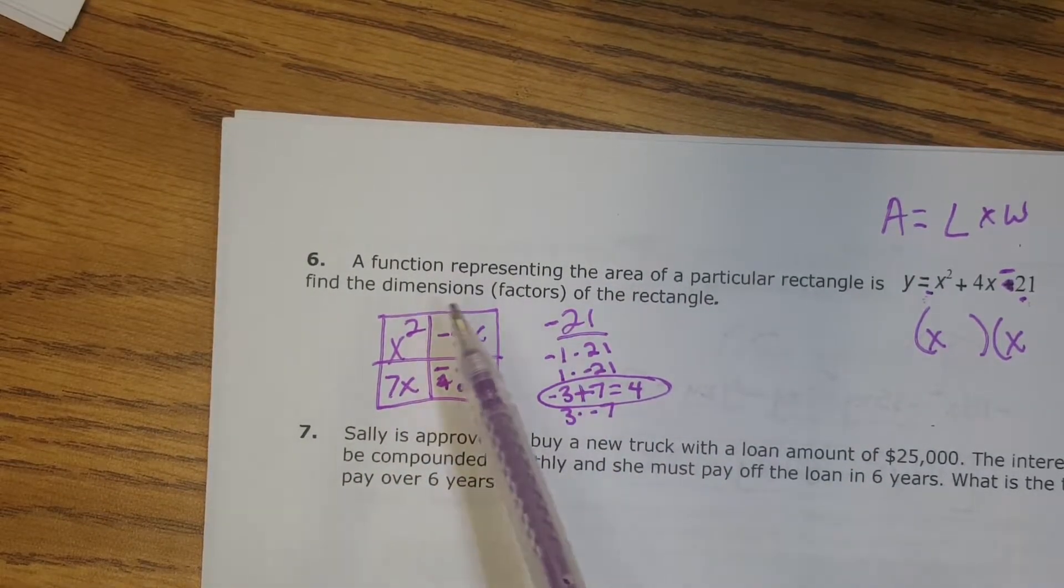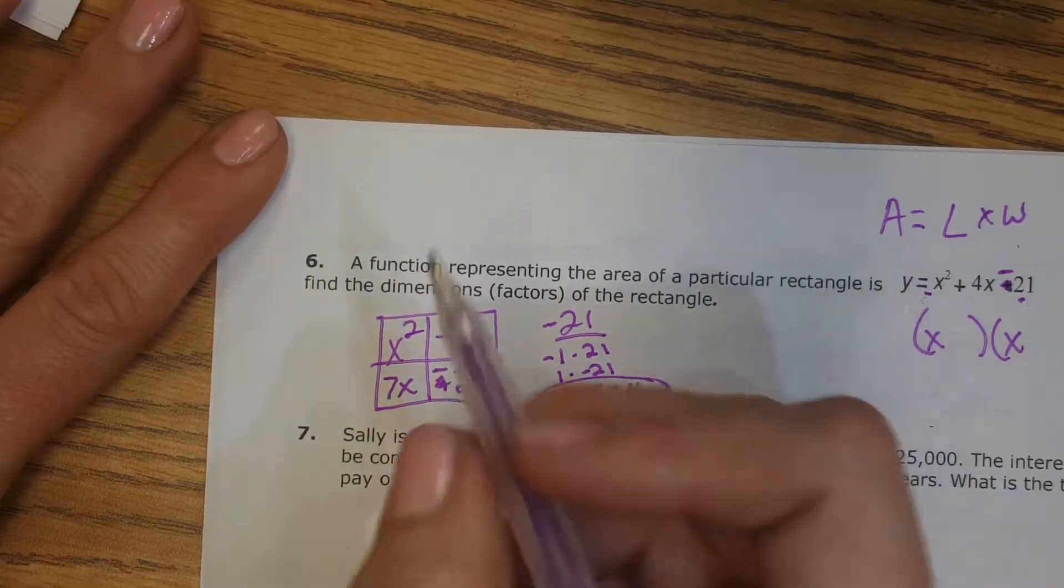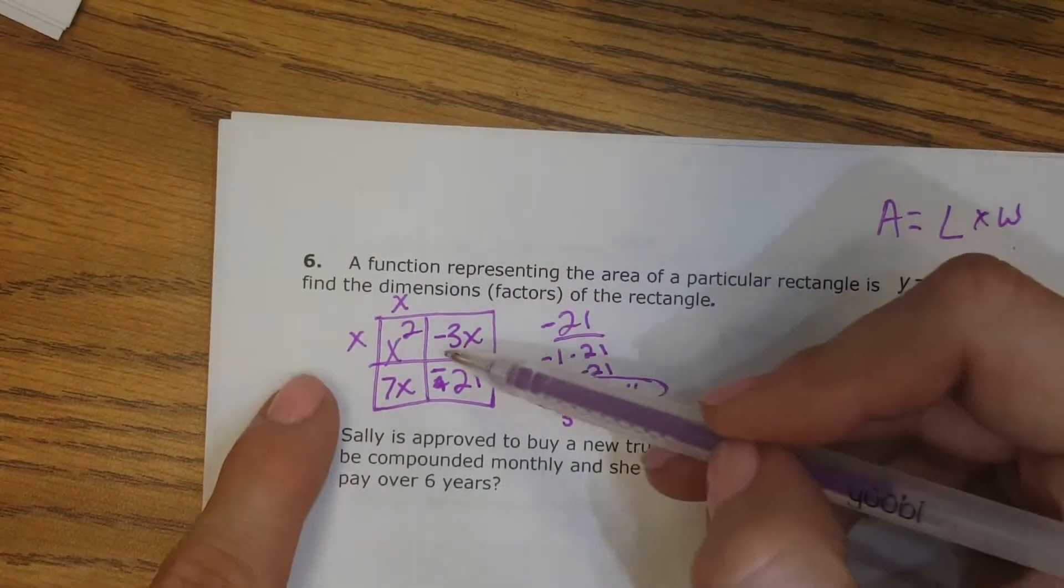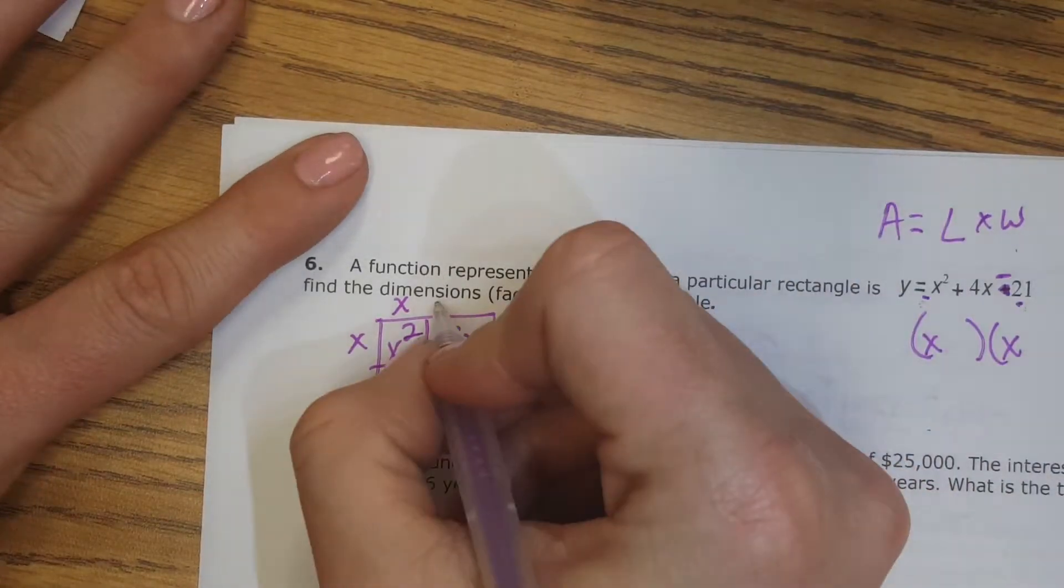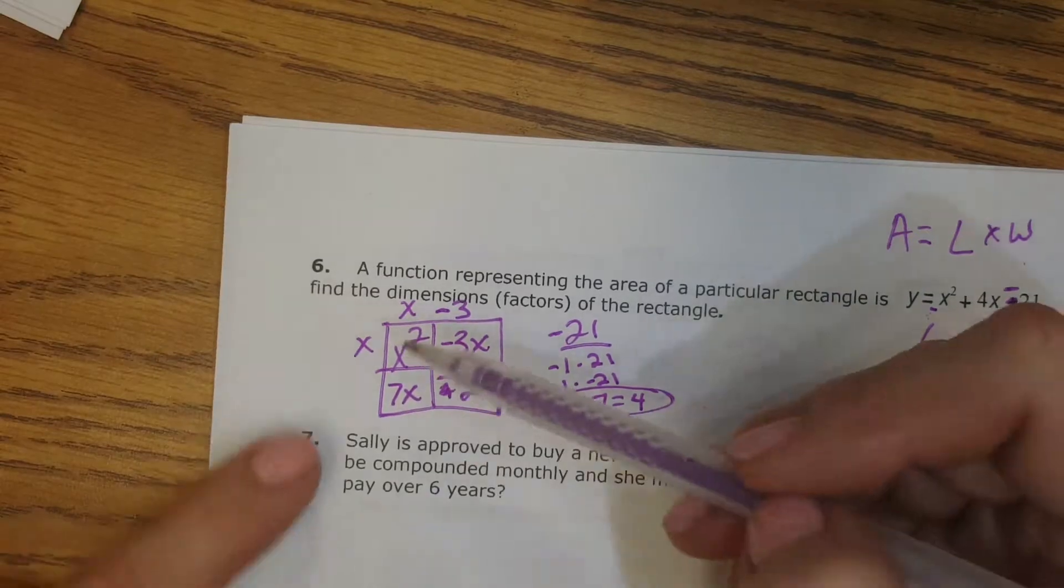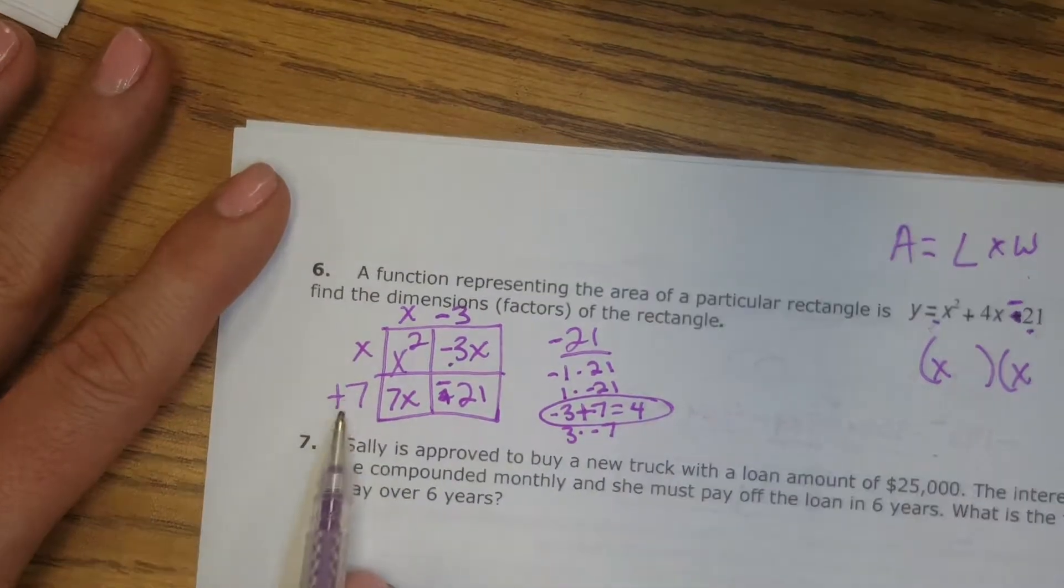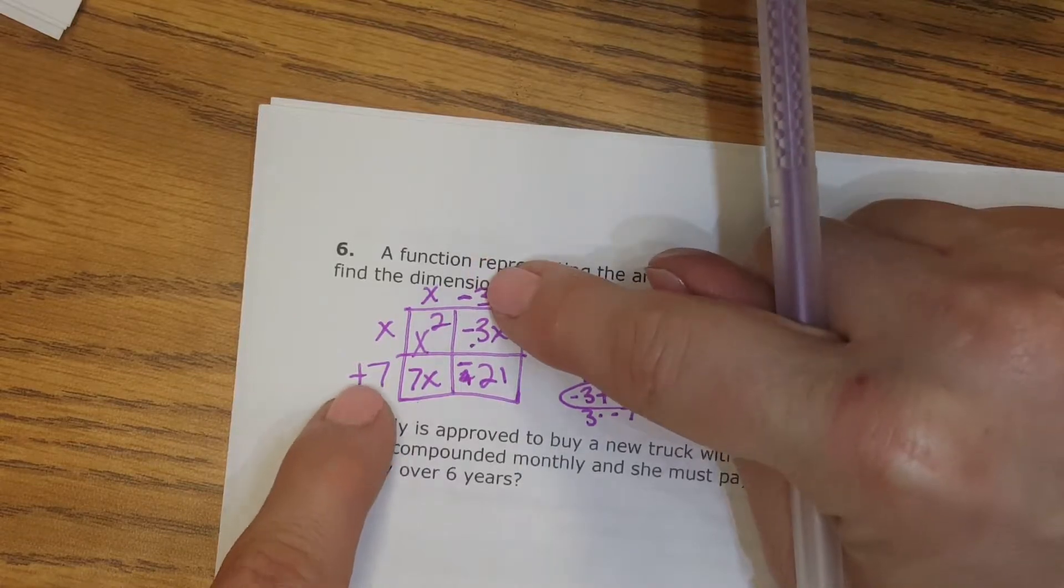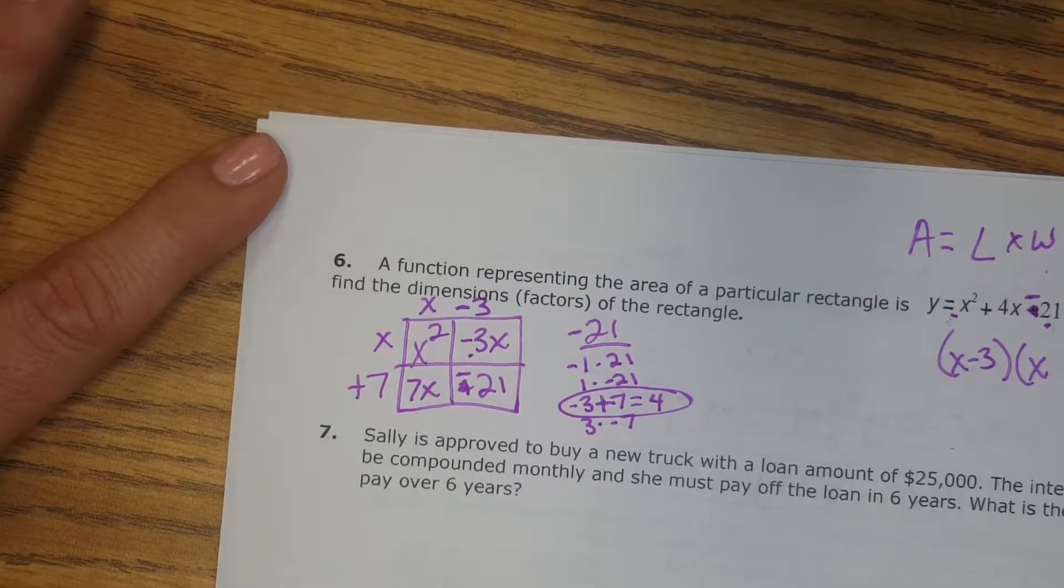So then we can start figuring out what our factors were. The factors were the things on the outside that we multiplied to get this. So I know to get x squared, I did x times x. And then to get my negative 3x, it would be x times something here. So x times negative 3 is what I would have had to put to get that negative 3x. And then to get my 7x, it was something times x. Well, that would have to be positive 7. So 7 times x gave me 7x. And then just to double check, 7 times negative 3, yes, that does give me negative 21. So my two factors are x minus 3 and x plus 7.